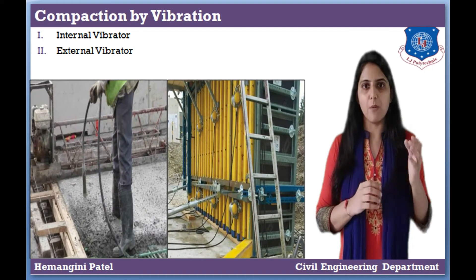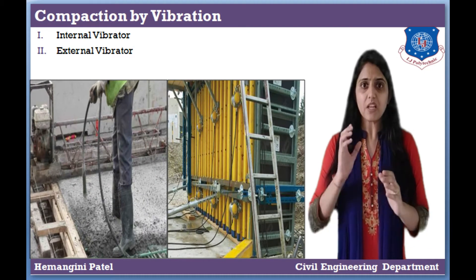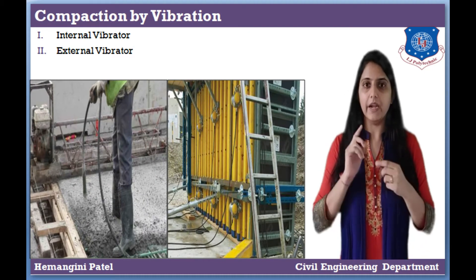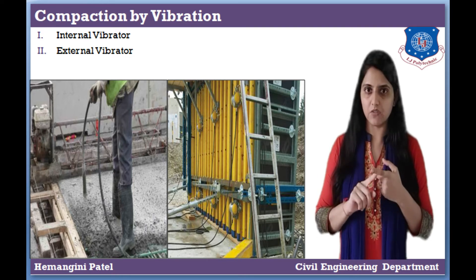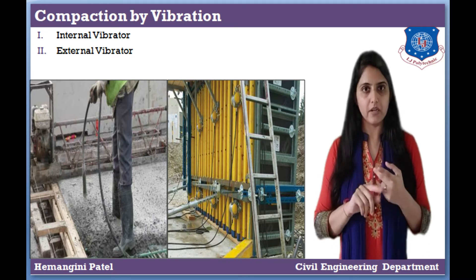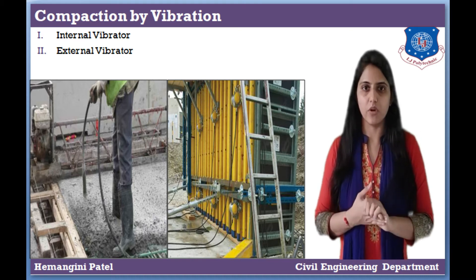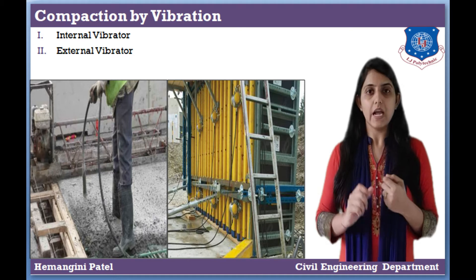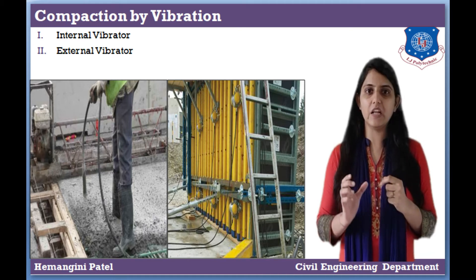The next method is compaction by vibration. Compaction by vibration is of 4 types: internal vibrators, external vibrators, surface vibrators, and table vibrators. Let's discuss one by one. First, internal vibrators, which we also know as needle vibrators.